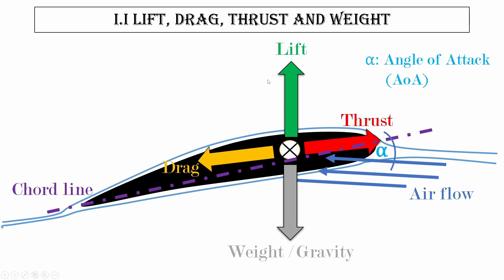Let's get started with the first chapter: forces of flight. This picture, which most of you are probably familiar with, explains at a top level the forces acting on an aircraft. We've outlined the airfoil as representative of the aircraft. The four forces acting on our aircraft at all times — no matter what aircraft we are flying — are lift, thrust, weight, and drag. There are two protagonists, lift and thrust, and two antagonists, drag and weight, and they come in these pairs.